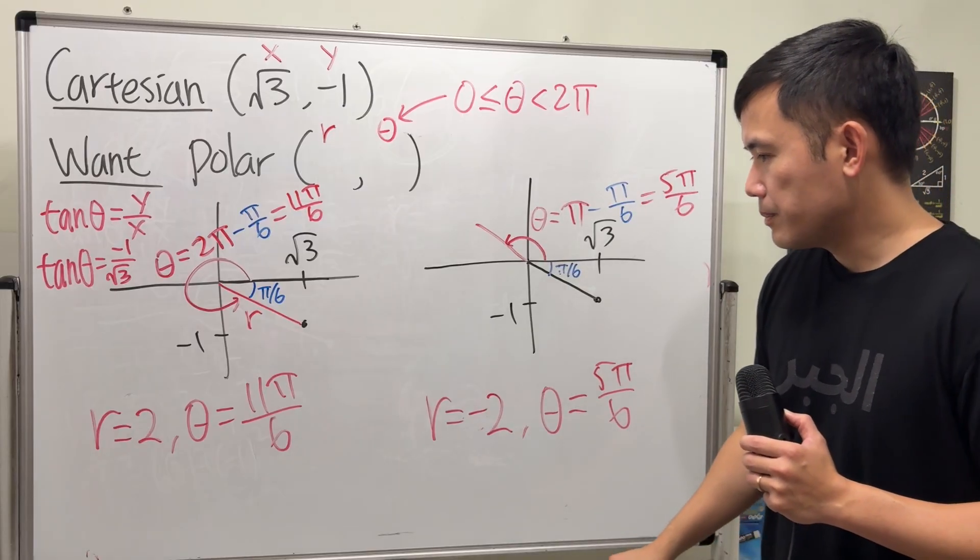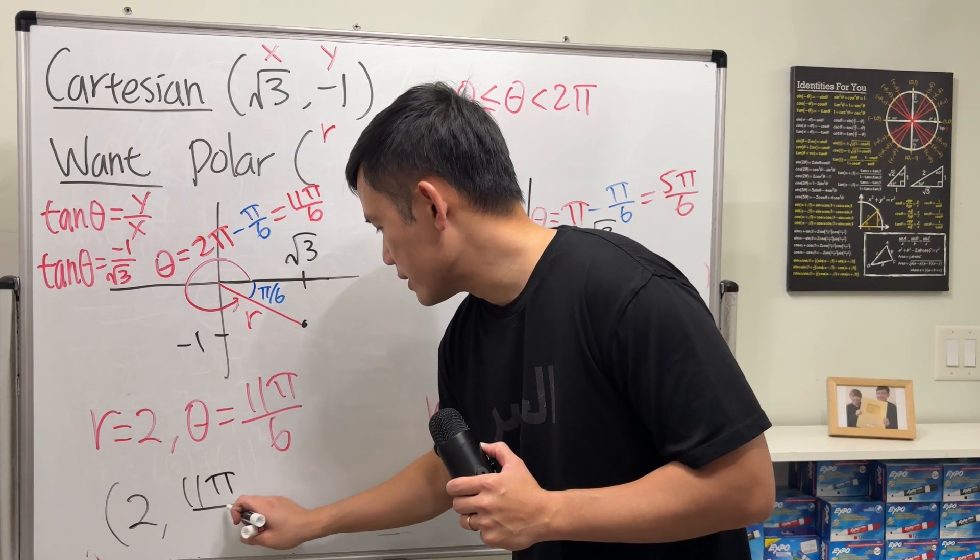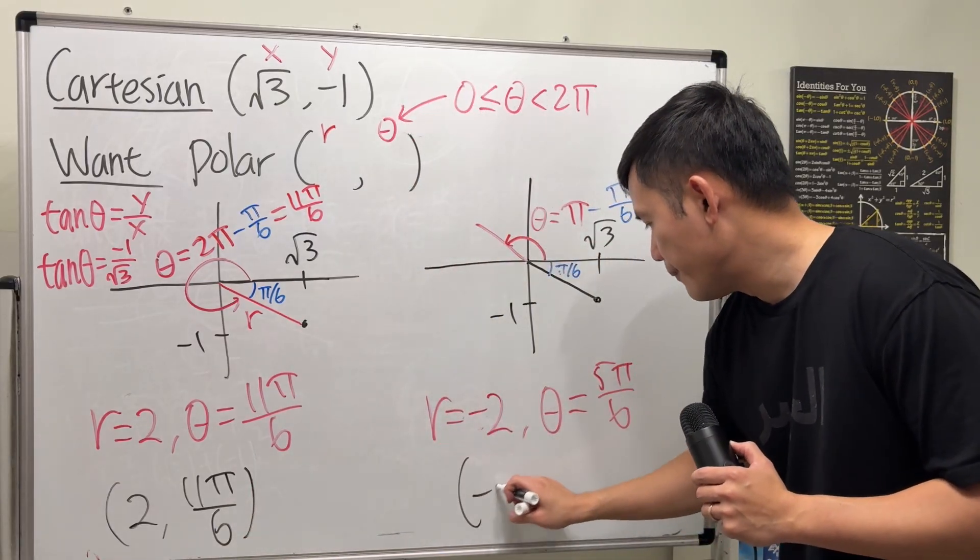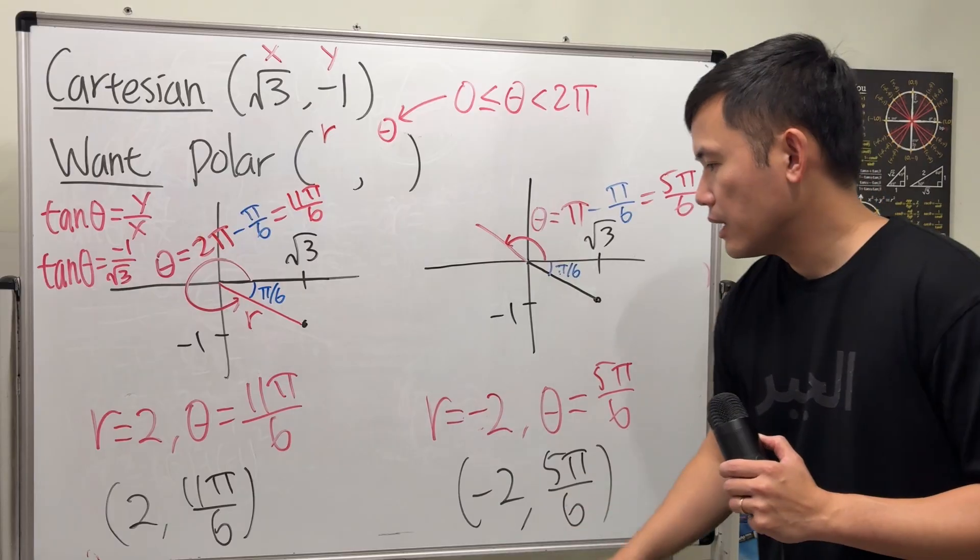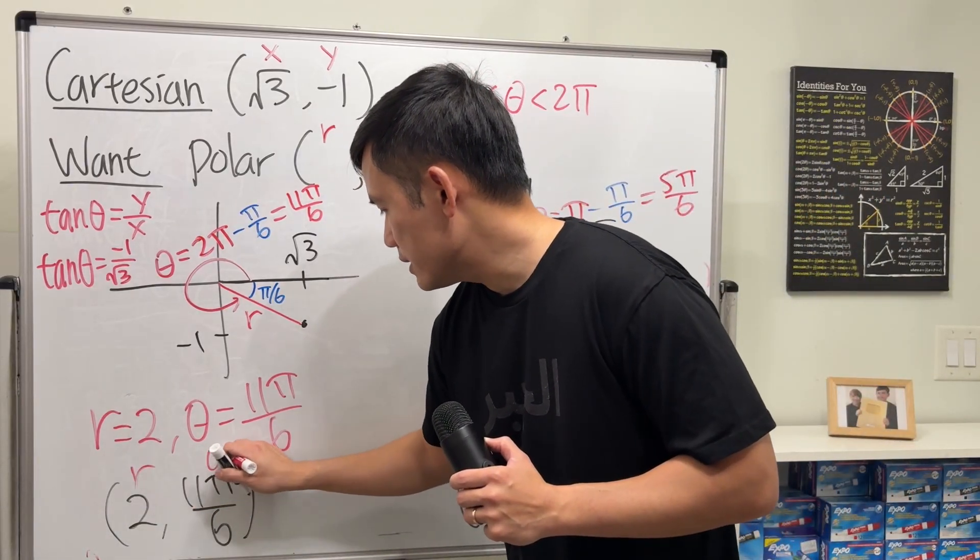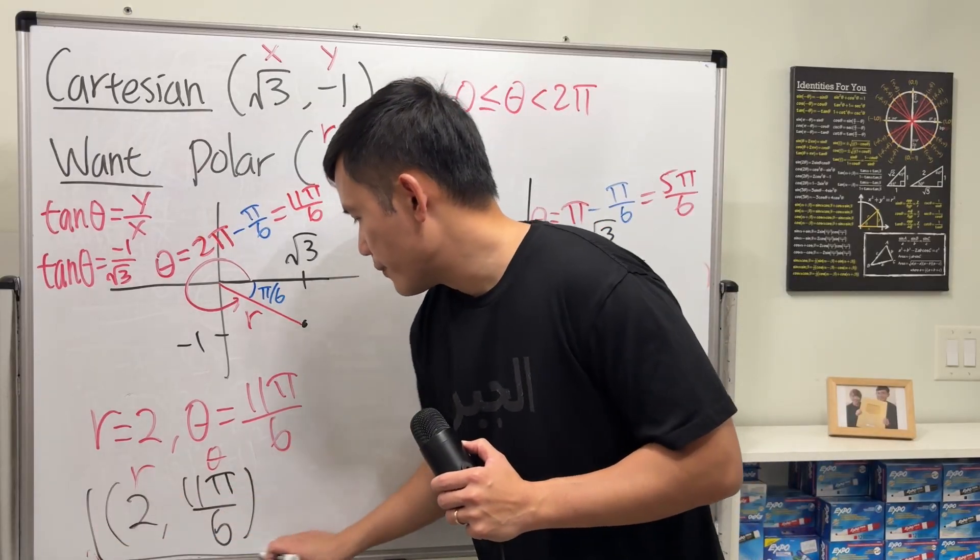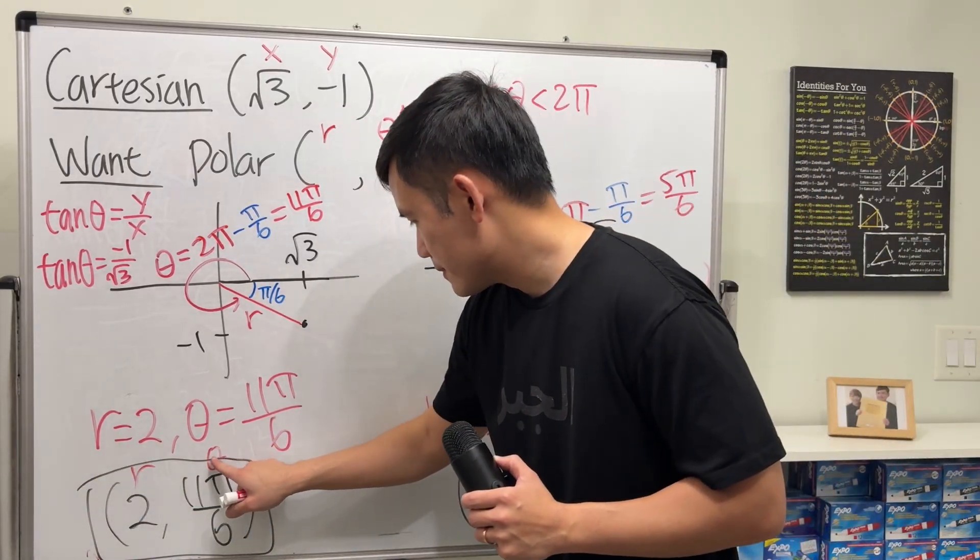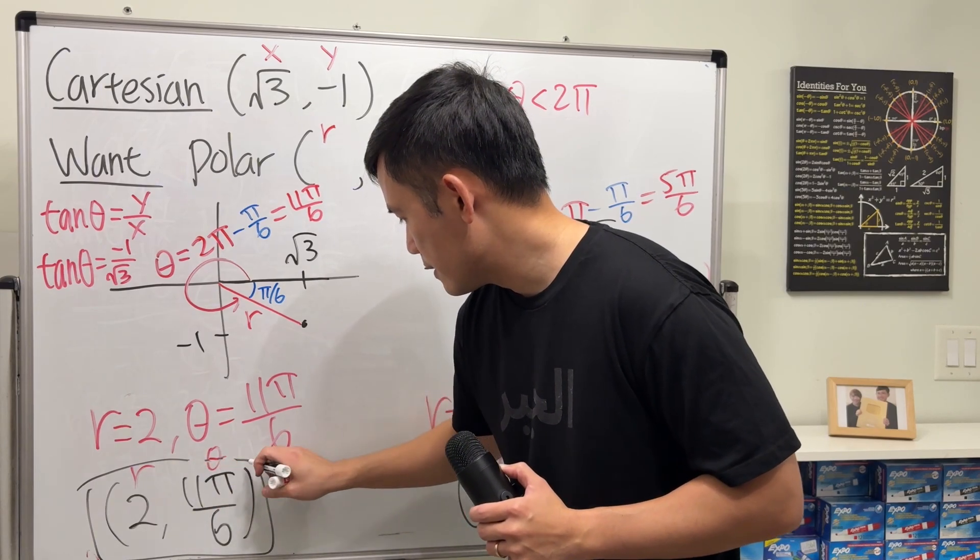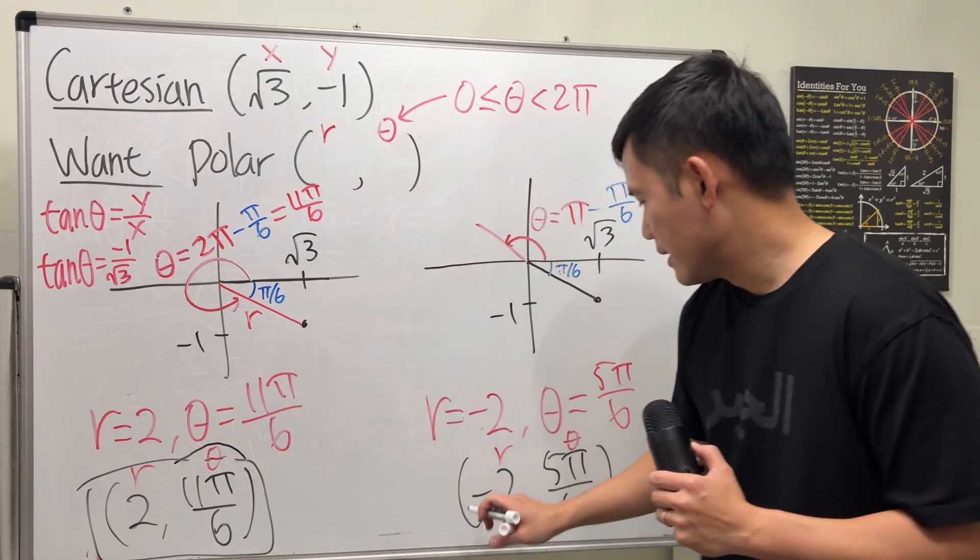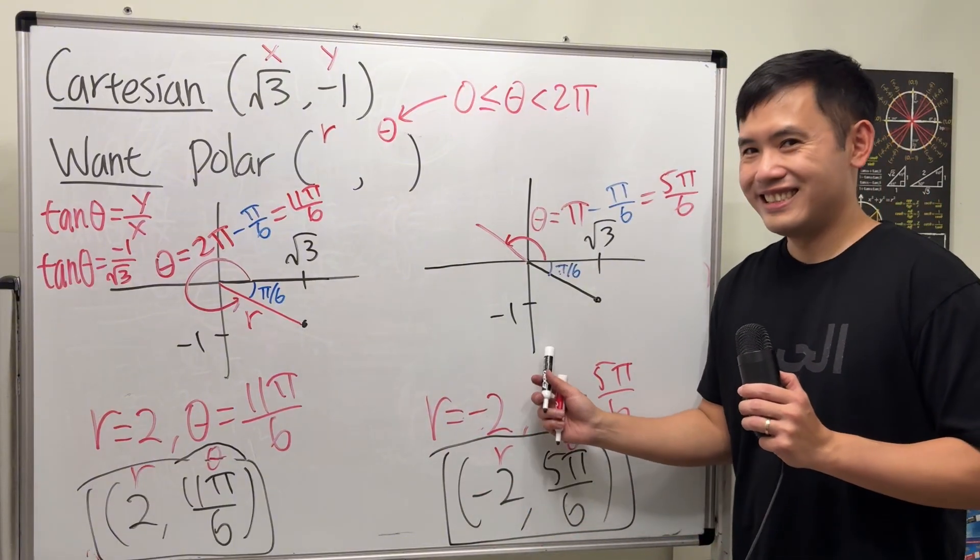So these are the two answers, and I'm going to write them down. (2, 11π/6). And then the other one, (-2, 5π/6). Remember, r goes first, and then the θ. So, first answer. And then second answer. Hope this helps. That's it.